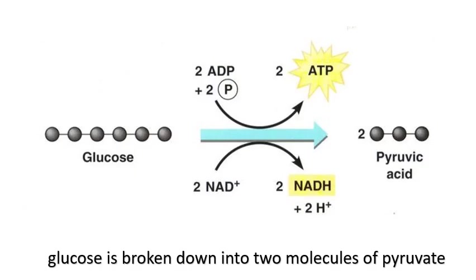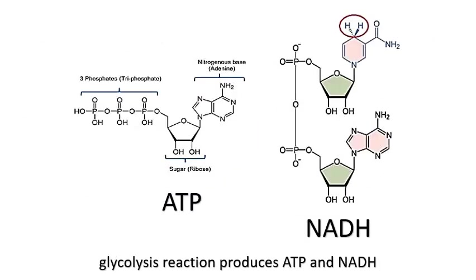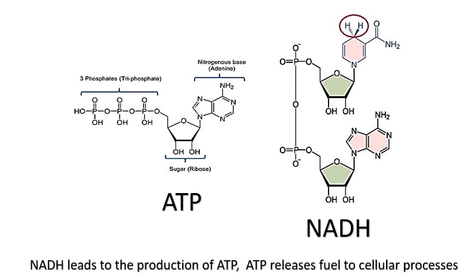What happens during a glycolysis reaction? The molecule of glucose, which is a 6-carbon sugar, is broken down into 2 molecules of a 3-carbon compound that we call pyruvate. A glycolysis reaction produces ATP or adenosine triphosphate and NADH or nicotinamide adenine dinucleotide. The oxidation of NADH leads to the production of ATP molecules, and we all know that ATP is a molecule that releases fuel to a cellular process.